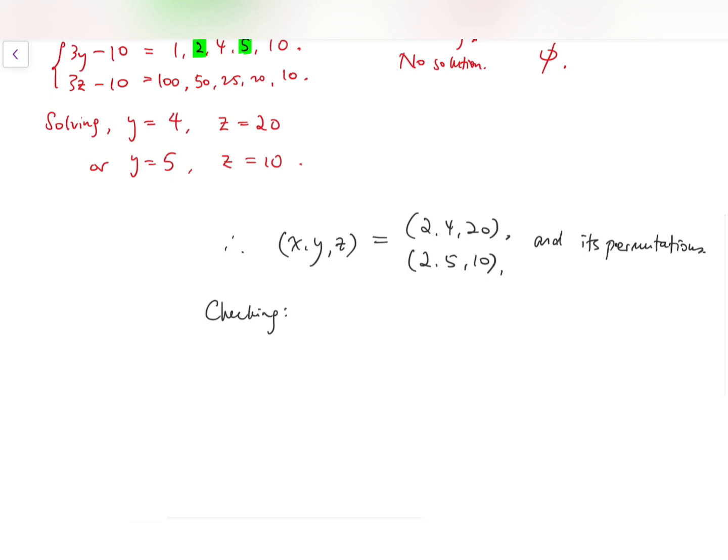Of course, we can do some checking, which is that 1 half plus 1 quarter plus 1 over 20 equals 3 quarters plus 1 over 20, and that is indeed 4 over 20, or you can write 16 over 20, which is 4 fifths. 1 half plus 1 fifth plus 1 tenth is equal to 5 plus 2 plus 1, which is 8 over 10, and that is also 4 over 5. So these solutions are indeed valid, and this is our final answer.